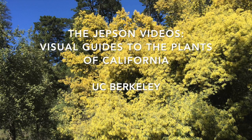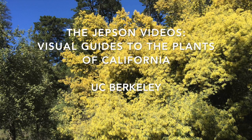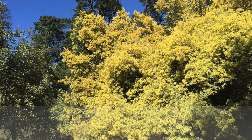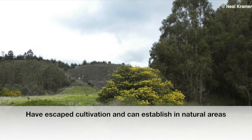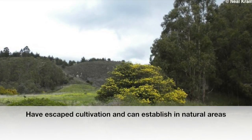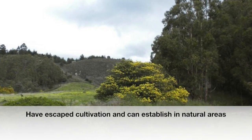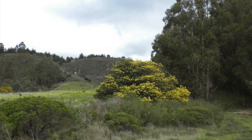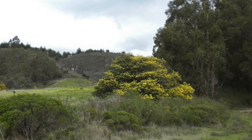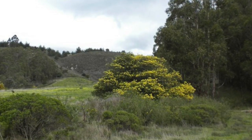In this episode of the Jepson videos, we discuss the genus Acacia. These non-native plants are from Southeast Australia and were introduced to California as ornamental landscaping. They are examples of species that escaped cultivation and have the potential to establish in natural areas and threaten native plants. Knowing how to identify them is the first step to mitigating their negative impact on native biodiversity.